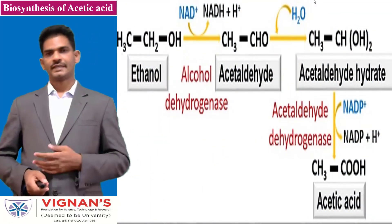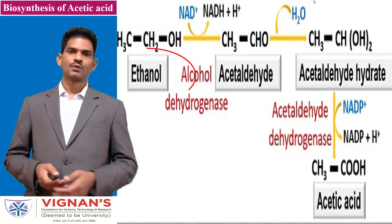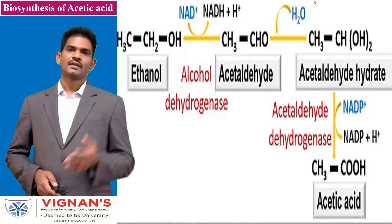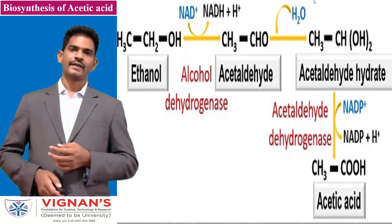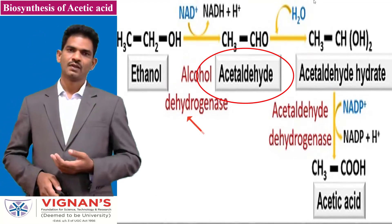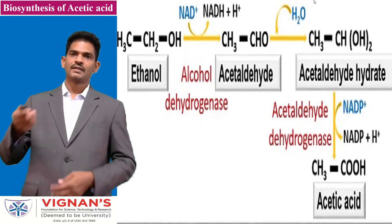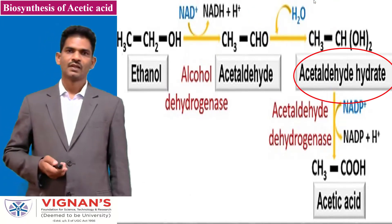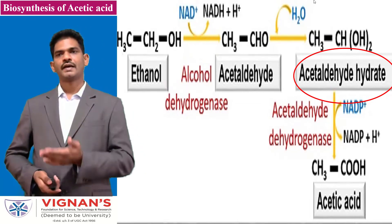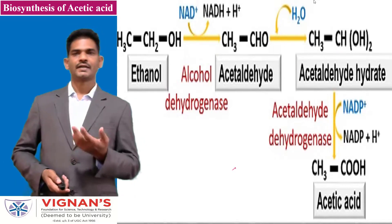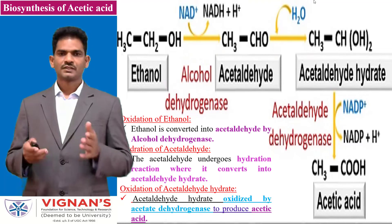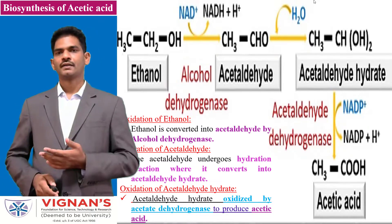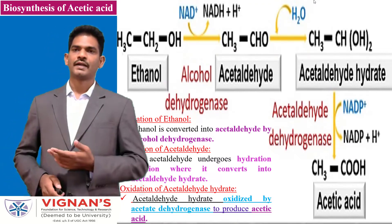In the biosynthesis of acetic acid, ethanol is the primary raw material — the main substrate. During biosynthesis, ethanol is oxidized to acetaldehyde by the action of alcohol dehydrogenase. In the second step, water is added by a hydration reaction, converting acetaldehyde to acetaldehyde hydrate. Then in a second oxidation stage, acetaldehyde hydrate is acted upon by acetaldehyde dehydrogenase to form acetic acid. The three steps are: oxidation of ethanol, hydration of acetaldehyde, and oxidation of acetaldehyde hydrate.